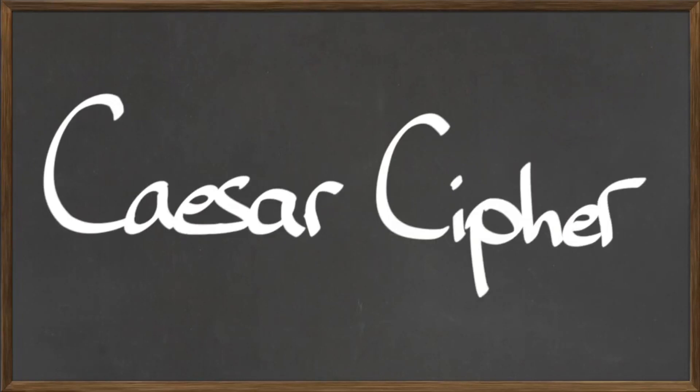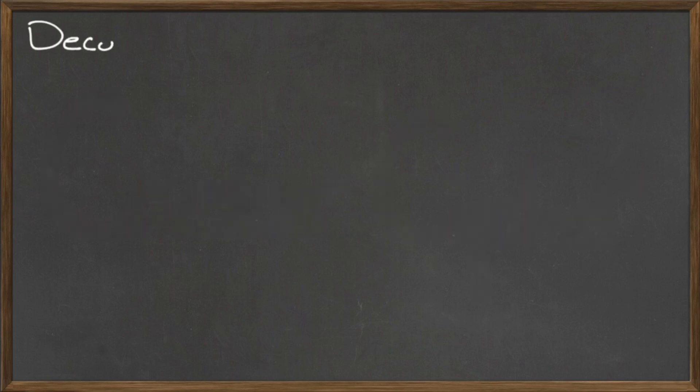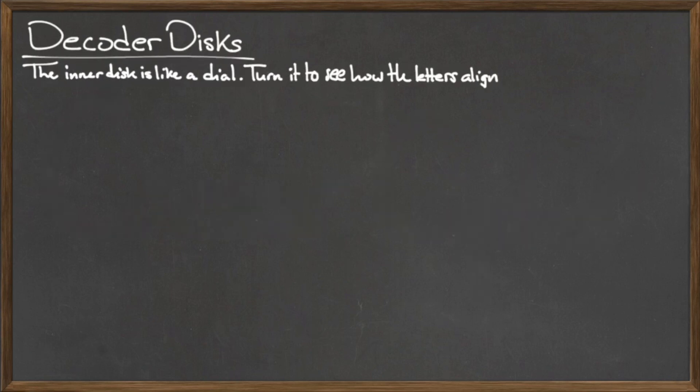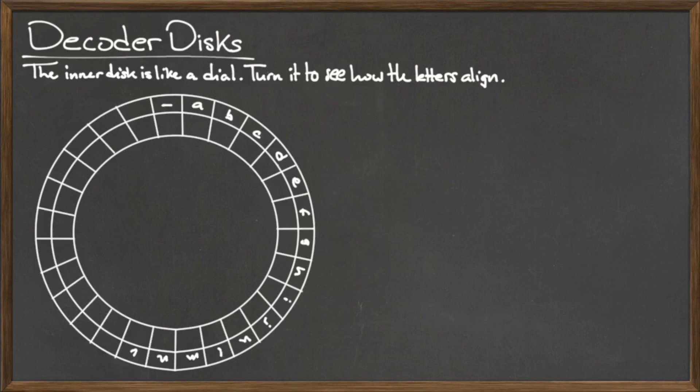In this video, we will examine the encryption scheme known as a Caesar cipher. The Caesar cipher receives its namesake from the Roman Julius Caesar, and is one of the earliest known implementations of symmetric key cryptography.